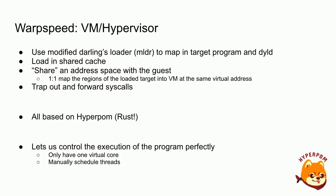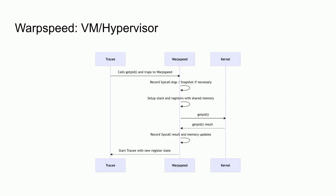This is all based on a project called HyperPalm, our research fuzzer specifically for Apple Silicon, written in Rust. This gives us perfect control over execution of the program, even without any ptrace-like interface. We only have one virtual core, we can manually schedule threads in and out. For a syscall: the tracee calls getpid, which does a supervisor call and traps out to us. We can record whatever we need out of memory, proxy the syscall to the actual kernel, and then record the exit code, registers, and memory changes, resuming the tracee with the new register state.